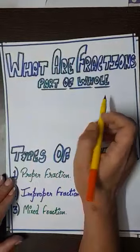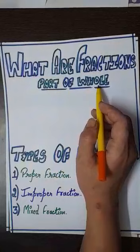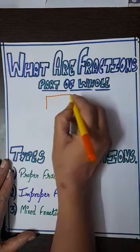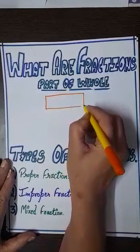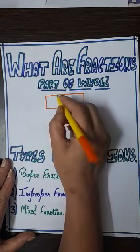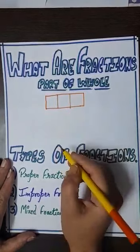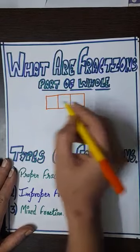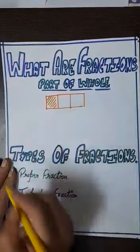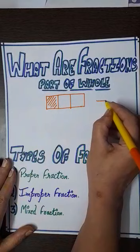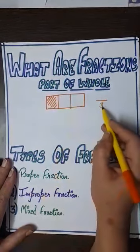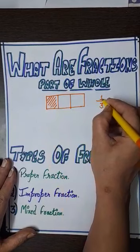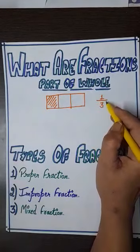What are fractions? Fractions are basically the part of a whole. For example, if we have a chocolate and divide it into three equal parts, each part represents a fraction. To represent one part, we write the total parts at the bottom and the parts which are shaded or required at the top. Together, the top and bottom numbers make a fraction.